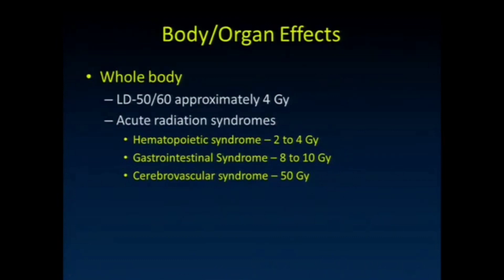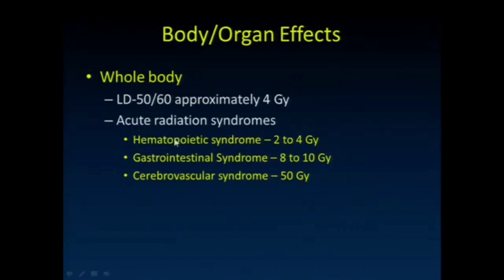Looking at whole body effects — the lethal dose that would kill 50 percent of the population at 60 days is approximately four gray in humans. This is nothing anyone would ever be exposed to as part of a radiologic procedure; these are radiation accident levels. With acute radiation syndromes, you really suppress the bone marrow with values in the two to four gray range. Gastrointestinal syndrome occurs at eight to ten gray, where you slough the entire mucosa of the gastrointestinal system.